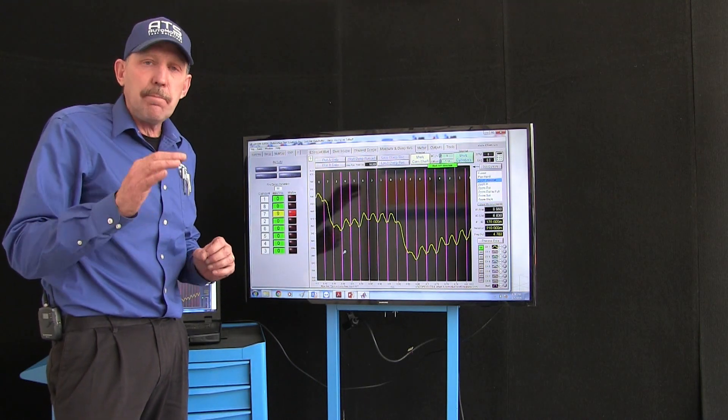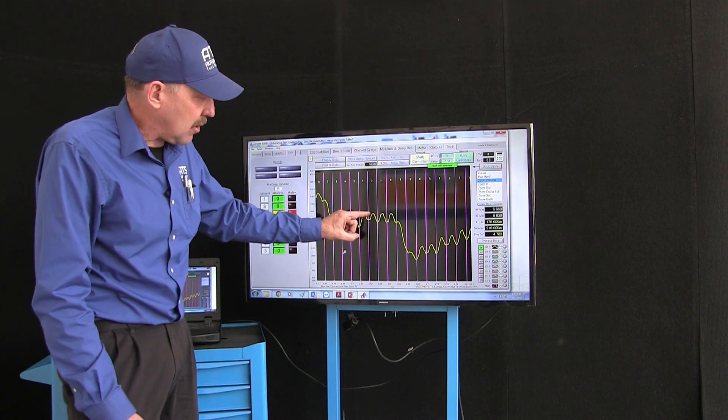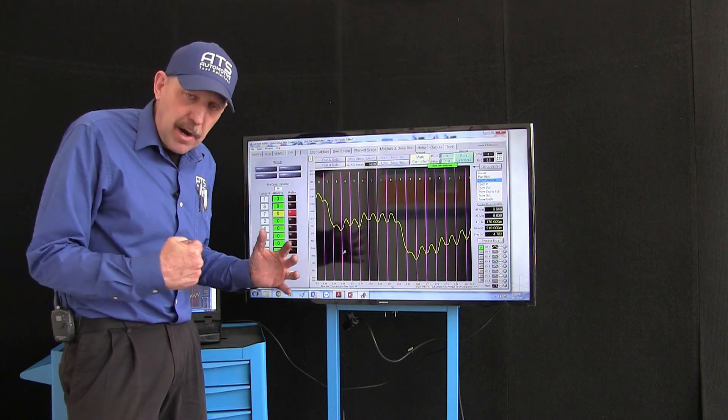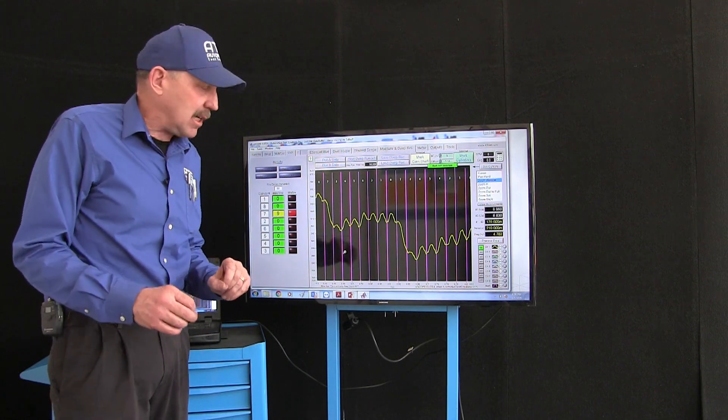This forces the piston down which in turn accelerates the crankshaft. Now the crank is accelerated and now another cylinder comes up on its compression stroke and it slows that piston down to the point of top dead center.